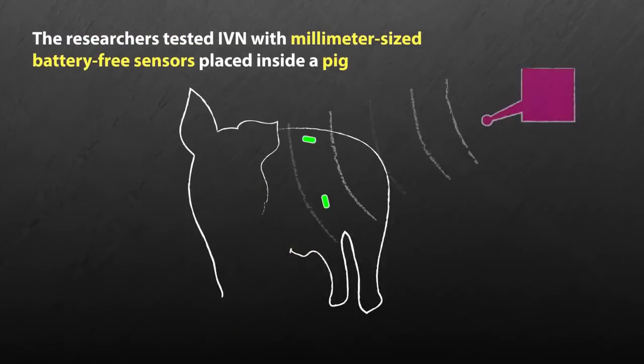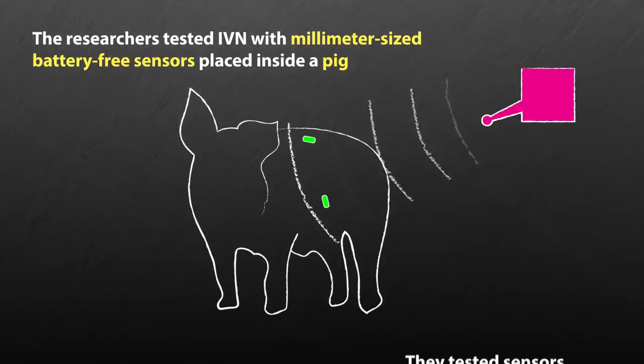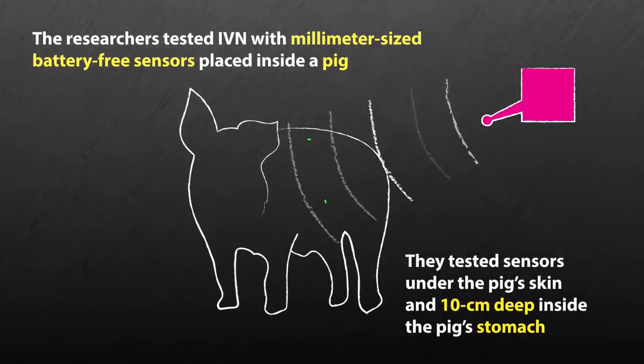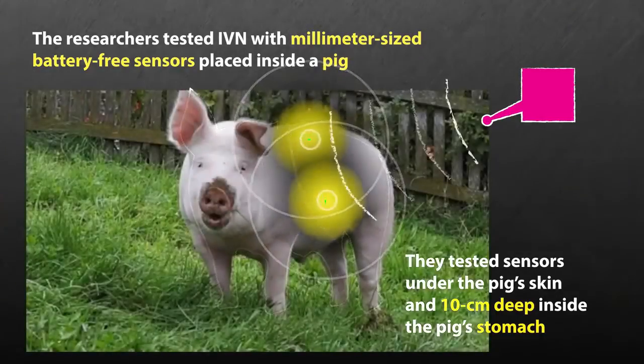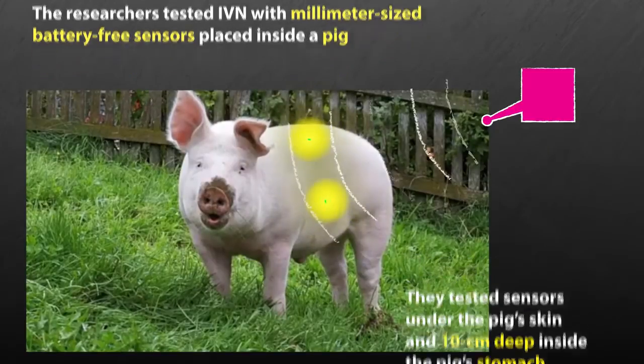The researchers have tested IVN with millimeter-sized battery-free sensors placed inside a pig. They have shown how to power up and communicate with battery-free tags placed under the pig's skin, and 10 centimeters deep inside the pig's stomach.